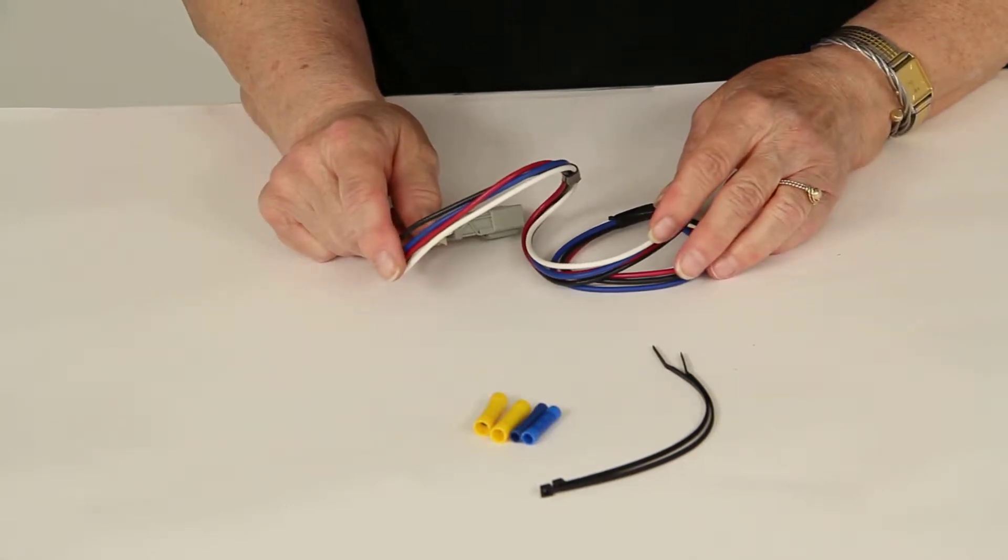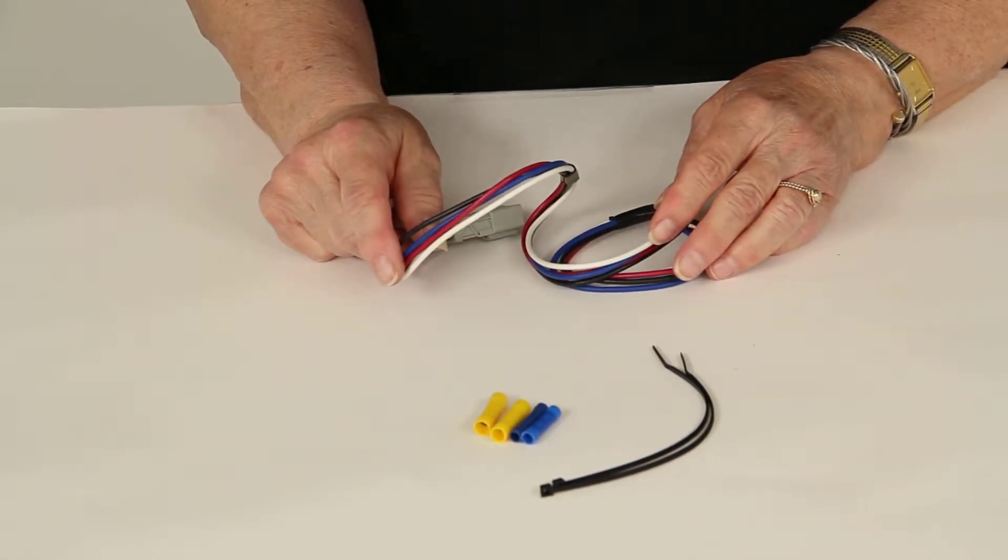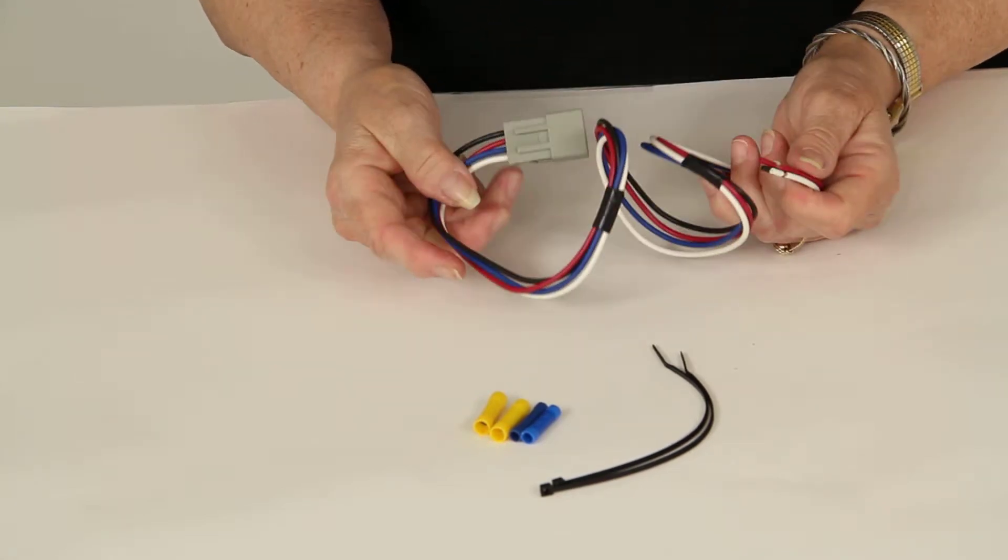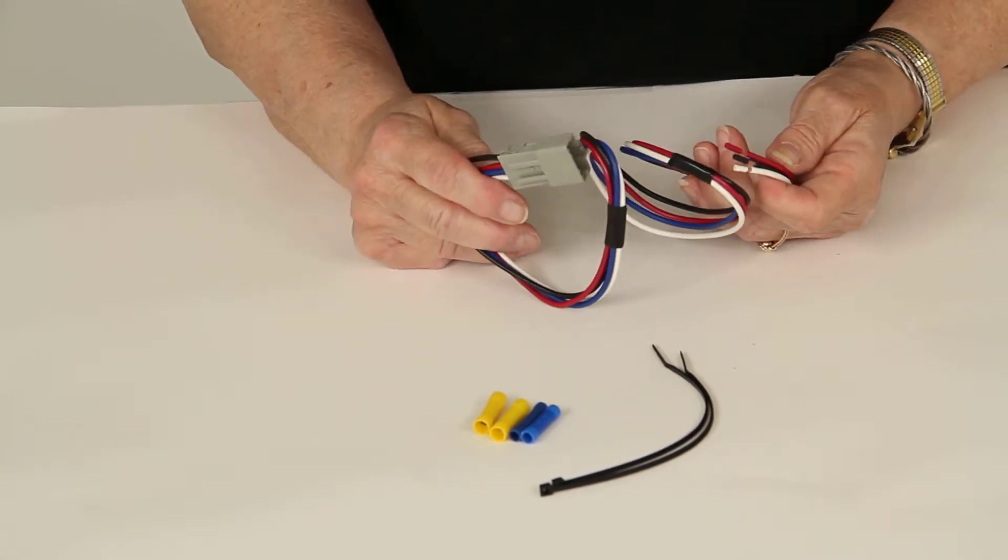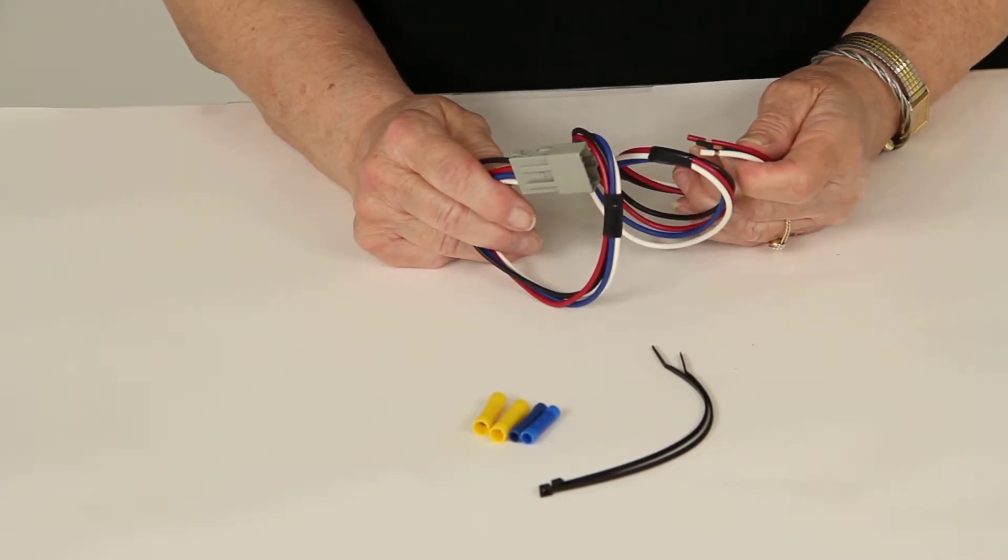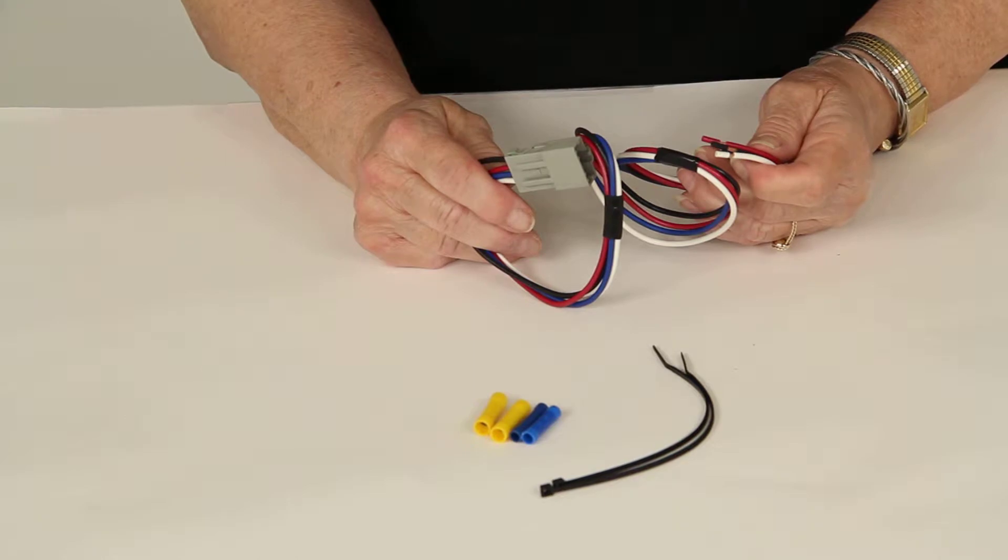Today we're reviewing part number TM75268 from TrailerMate. This is a custom wiring adapter for trailer brake controllers. It fits the 2009 through 2012 Honda Pilot and the 2006 through 2012 Honda Ridgeline truck.